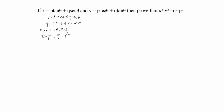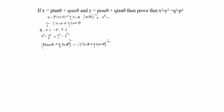We will substitute the values of x and y. x² is (p·tan θ + q·sec θ)², which is of the form (a + b)². The formula for (a + b)² is a² + 2ab + b².